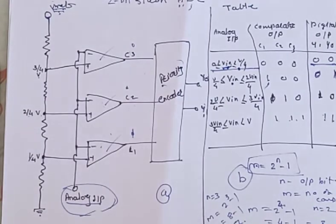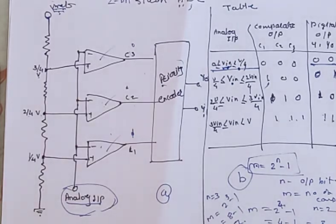The 2-bit flash ADC is the fastest among all analog to digital converters.